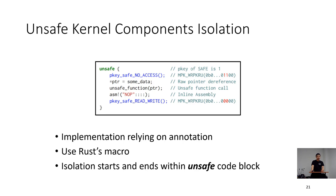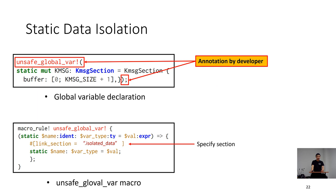Our isolation scheme implementation relies on annotations. We use Rust macros to expand code. We put annotations at the start and the end of the unsafe code. For static data accessed by the unsafe kernel code, we allocate them on the isolated data section using Rust code. When declaring a global variable, we wrap the declaration with a Rust macro, which specifies the section for the global variable.